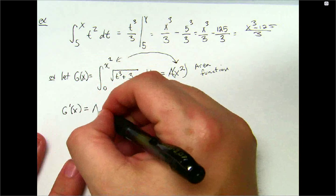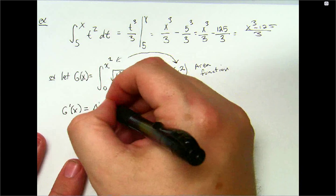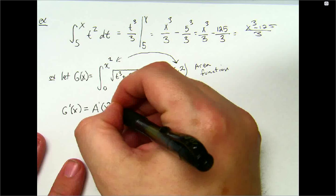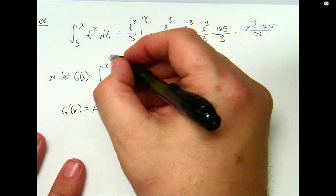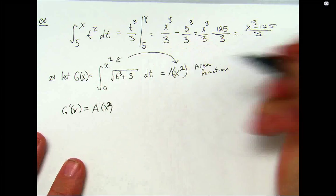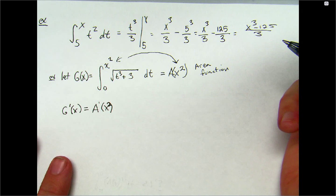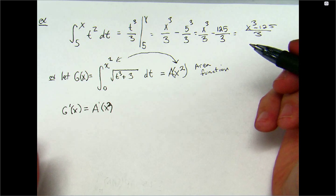Now, this is going to be equal to g prime of x is going to be equal to a prime of x squared, because that's what the area function actually is. Because the upper limit is x squared, that has to go into here. Now, is that x or is that something, is that a function that is more than x? Chain rule.